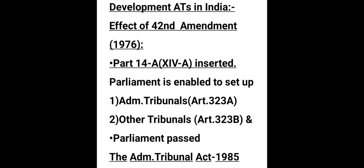Now let's see the development of administrative tribunals in India. By the 42nd Constitutional Amendment of 1976, a new part — Part 14A — was included in the Indian Constitution. In Part 14A, Parliament is enabled to set up administrative tribunals under Article 323A, and other tribunals under Article 323B. Based on these articles, Parliament passed the Administrative Tribunal Act in 1985.